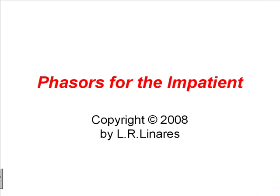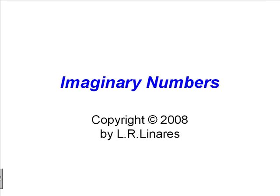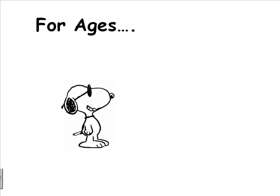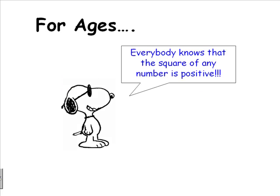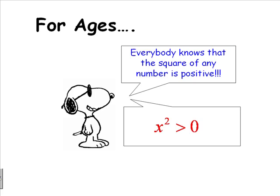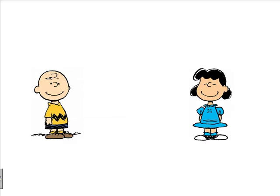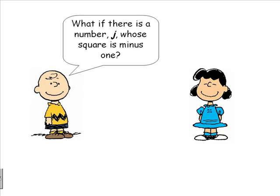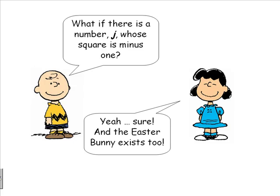Phasers for the Impatient. Let's begin with imaginary numbers. For ages people have been saying that every time you square any number you get a positive number. It was so much so that when someone said, what if we have a number whose square is negative — let's say j, whose square is minus one — people mocked him, they made fun of him and they said, you are imagining things. That j is an imaginary number.